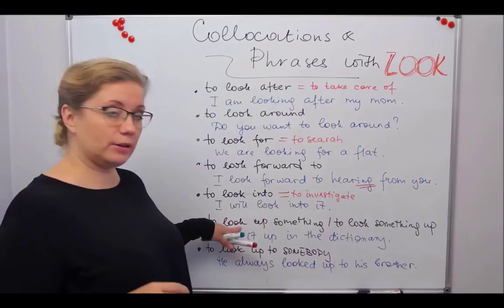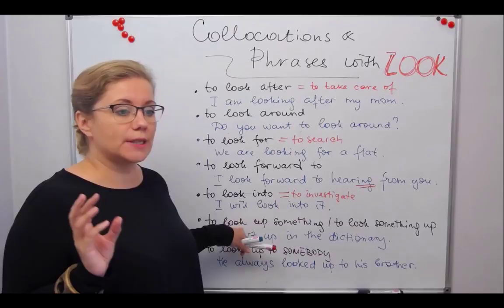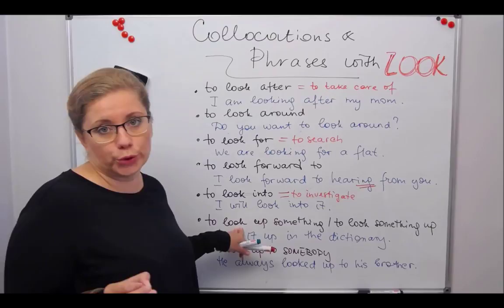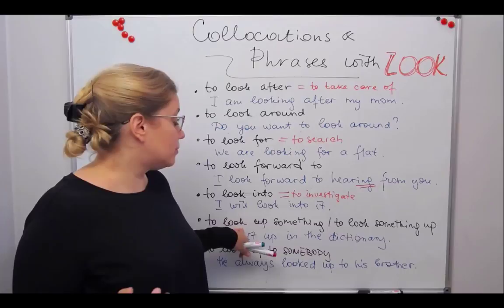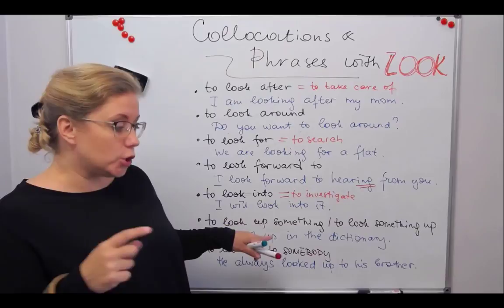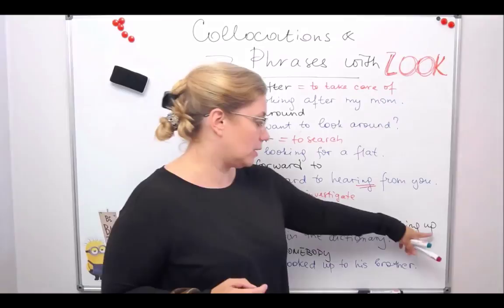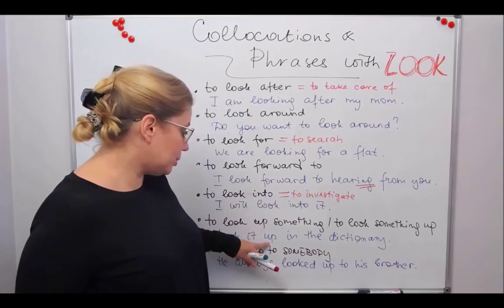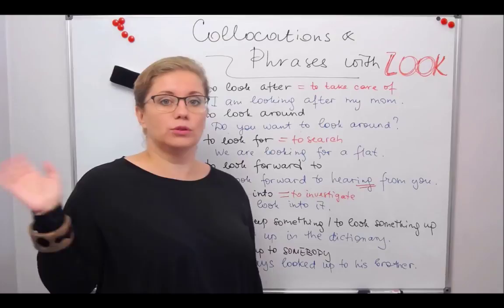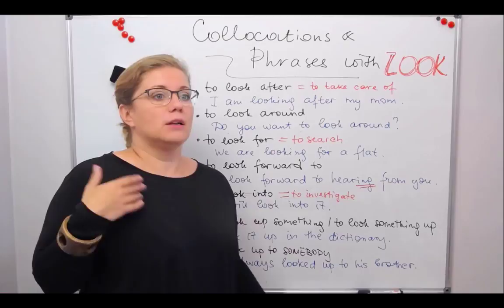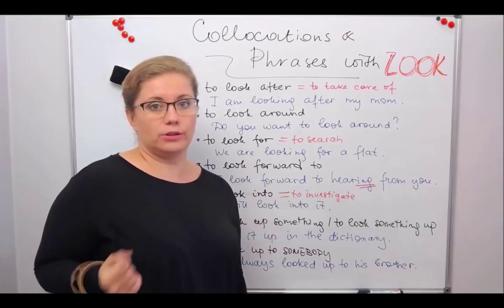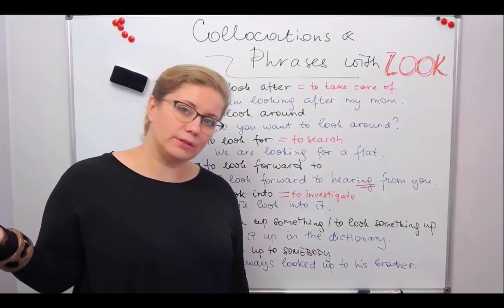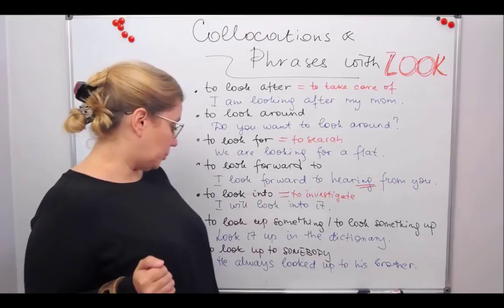When we talk about dictionaries, encyclopedias, or any kind of reference — when you want to find a word in the dictionary or find information on Wikipedia — you use the phrasal verb 'to look up.' It can go in different structures: 'to look up something' or 'to look something up.' We more often use the second: 'look it up in the dictionary.' You can't say 'look for it in the dictionary' — that's just not how it's used. 'Look it up. Will you look it up for me? Can you find this information for me somewhere in the books?'